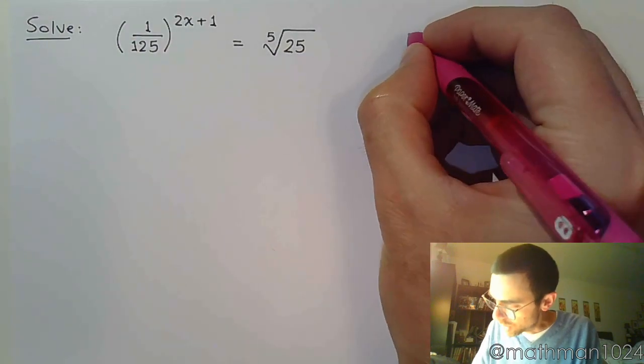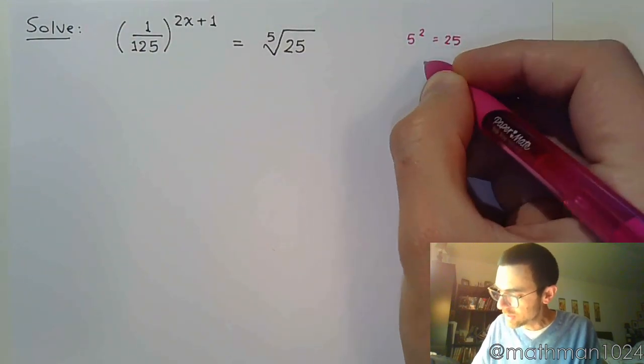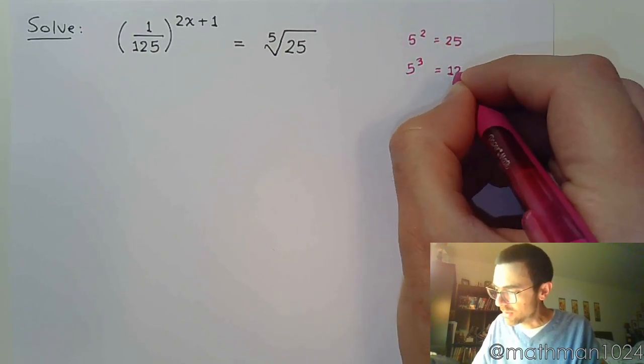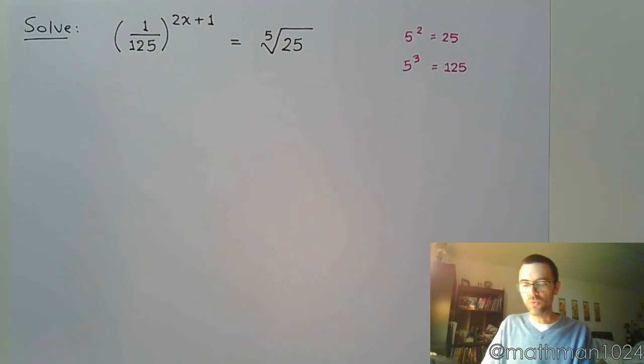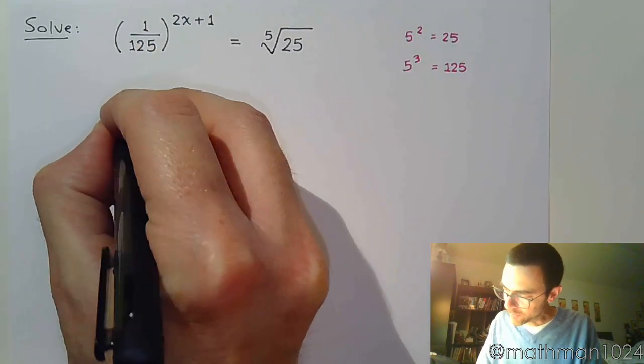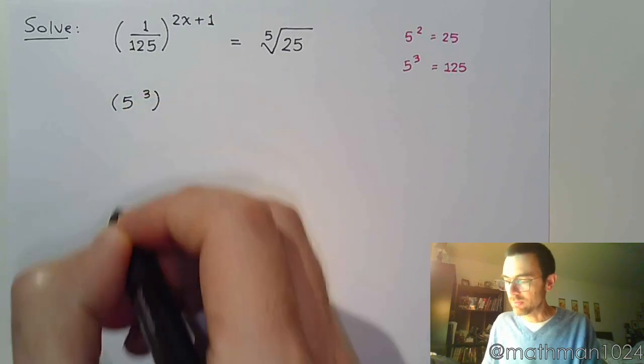We know that 5 squared is 25, and we know that 5 to the third is 125. So let's see how that information helps us rewrite this equation so we can go from something that's exponential to something that is hopefully linear.